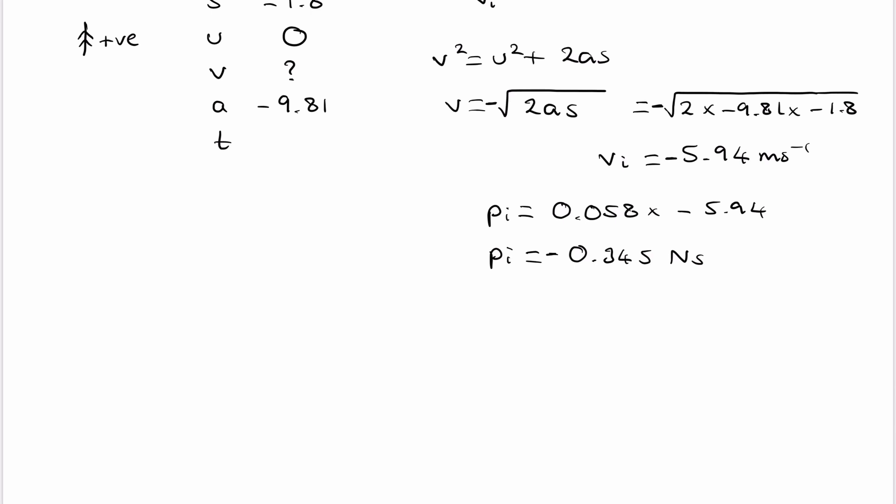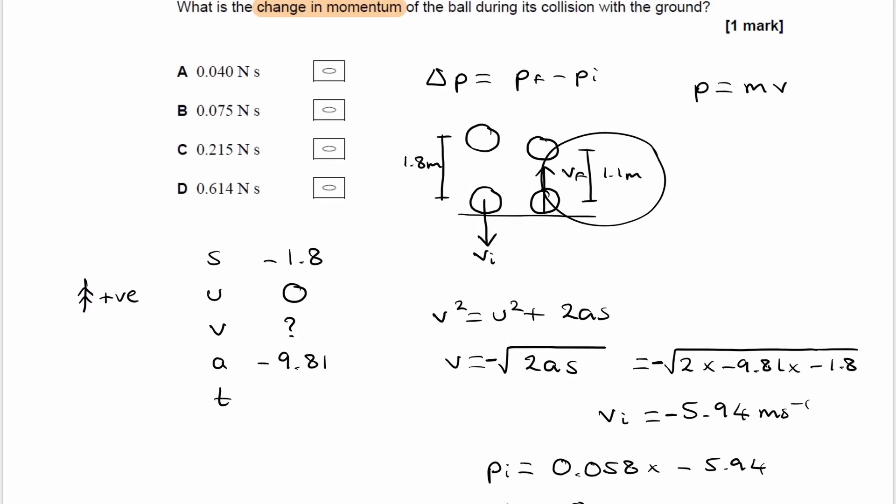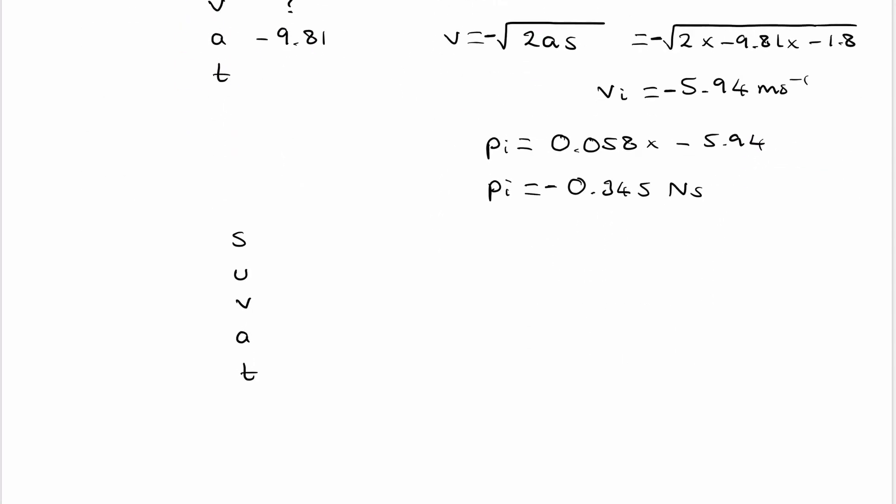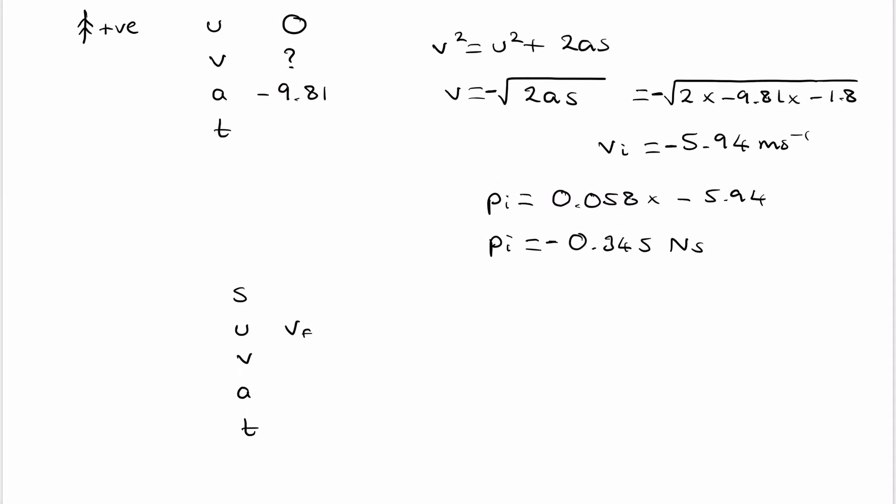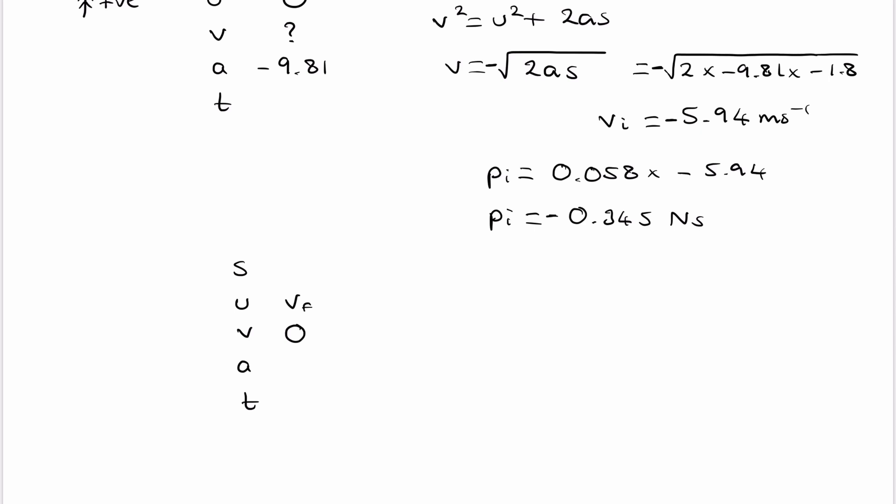So let's draw out another SUVAT table. So again, this time we're still considering the upward direction to be positive. Let's be consistent with that for the whole question. The displacement in this case is 1.1 upwards. So that's positive. And we know that it comes to rest when the ball reaches the top. So the final velocity is 0. The initial velocity is vf. That's the velocity of the ball when it leaves the ground. So initial velocity is vf. The final velocity is 0 as it comes to rest. Displacement was 1.1. That's the upward distance traveled. And the acceleration is downwards. So that will therefore be minus 9.81.